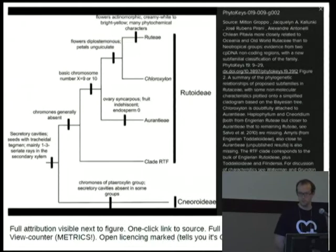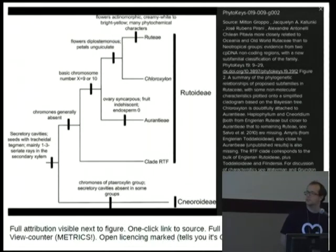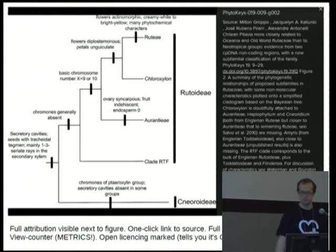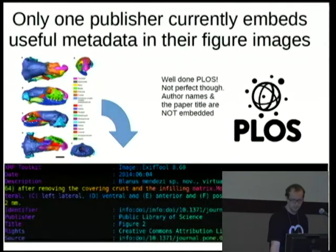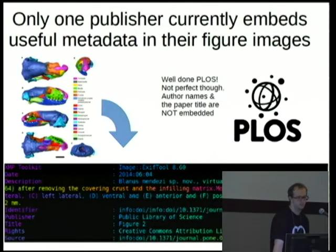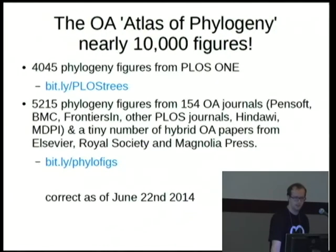Here's an example of a particular figure — you've got the source of where it came from, the figure text, and it's all searchable. It's open, there are metrics, and it's interesting. PLOS does some interesting things too: they embed data in their figures, which is really useful. Well done PLOS — I wish more publishers did that.